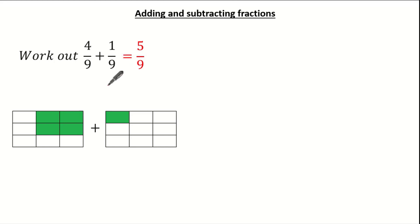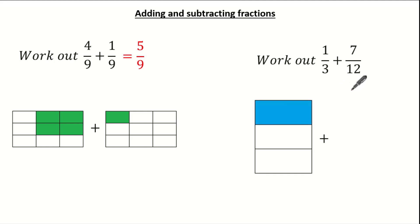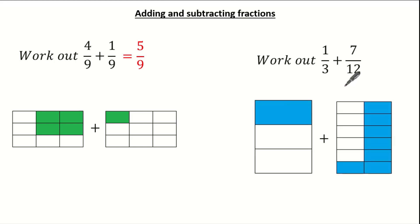But what happens when we have different denominators? We have to look for a common denominator. Let's look at this question where we have different denominators. Here we're asked to add 1 third and 7 twelfths. But all our portions are different, so let's identify the lowest common multiple, because that will enable us to make the denominators the same.